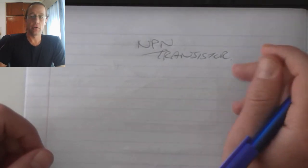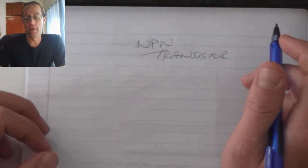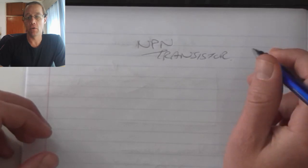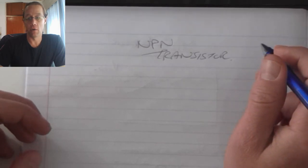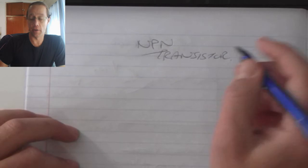The NPN transistor is a device that has the ability to control a voltage according to the amount of current it experiences.